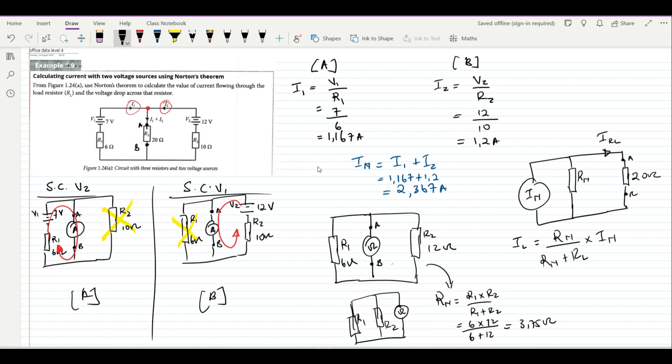In this case, our R Norton is 3.75 divided by 3.75 plus 20, multiplied by our I Norton which is 2.367. And we find that the answer here in the current will be 0.374 amps.